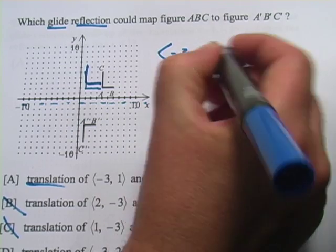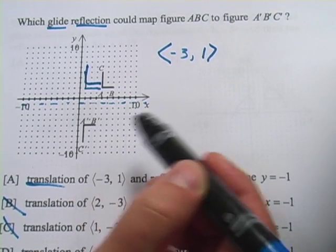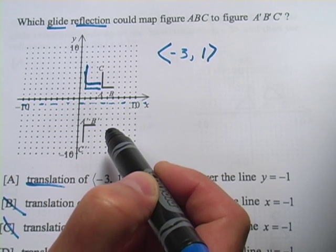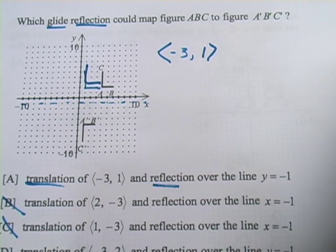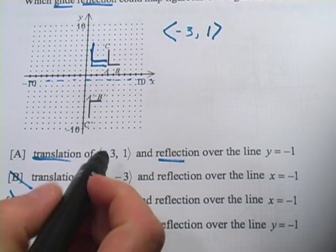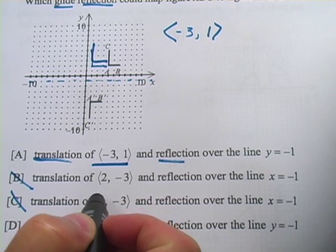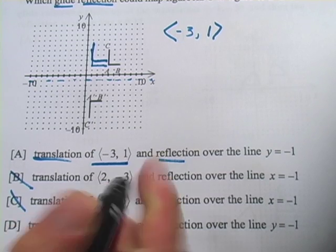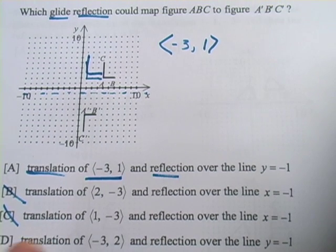So I'll add that to my vector notation. So I'm going to translate it to the left three and up one, and then I'm going to reflect it over that line y equals negative one. That looks like it should work, and if we're lucky, that's one of our answer choices. And yeah, it looks like A. Translation of negative three, one, and reflection over the line y equals negative one. So that is a glide reflection.